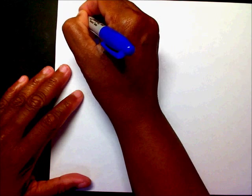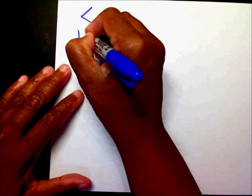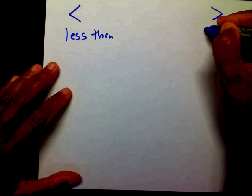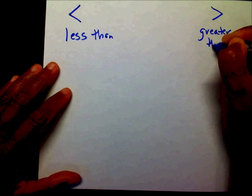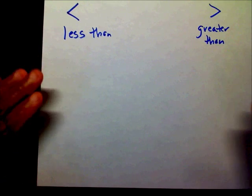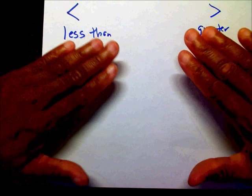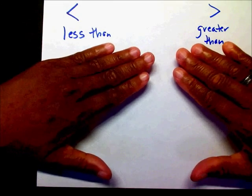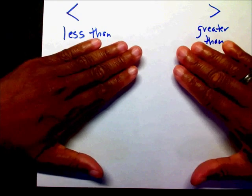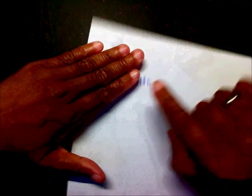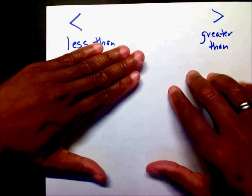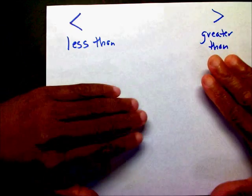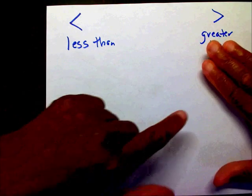This is less than and this is greater than. If you look at your hands, you should see the less than sign and the greater than sign. Here is your less than sign on the left hand, and on my right hand side, this is my greater than sign.